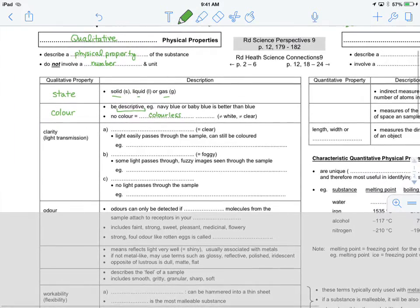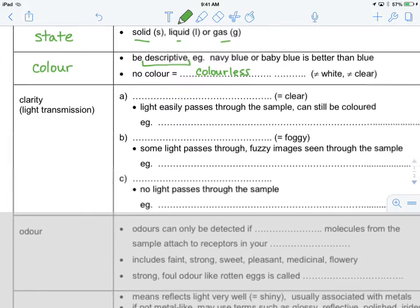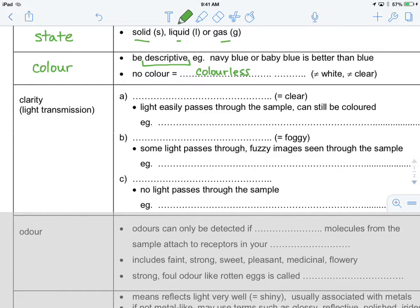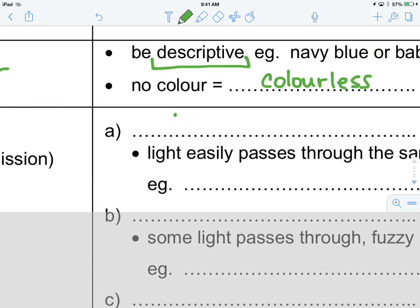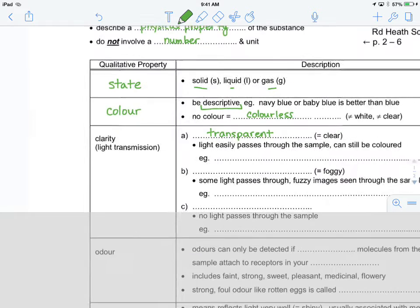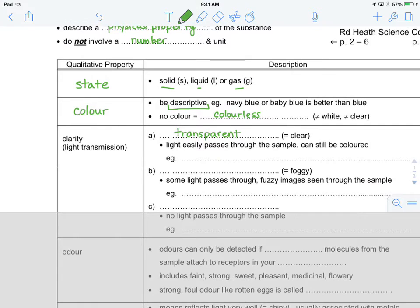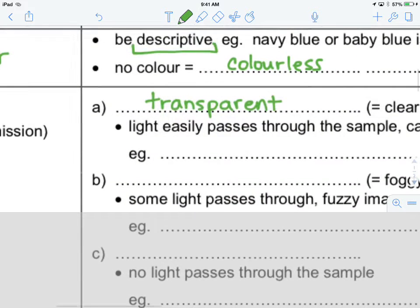Now we'll talk about clarity, which is how well an object transmits light or allows light to be transmitted. The first way that we could describe is by saying an object is transparent. Now this means, unlike colorless, transparent means the object is clear. So, you can see through it, light easily passes through the sample. It could still be colored. An example of this would be a window.